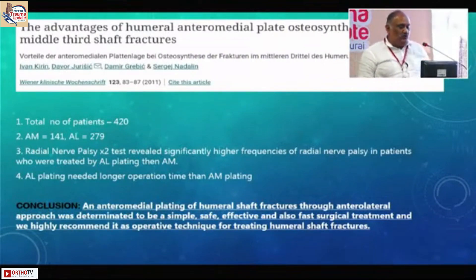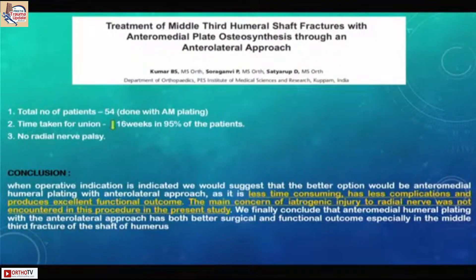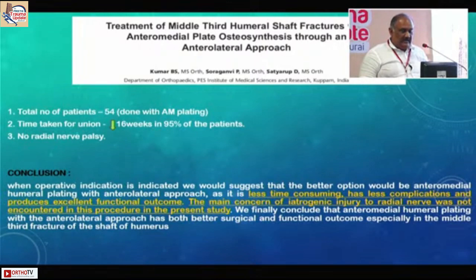This is another ipsilateral shaft of humerus and both-bone forearm injury with good fixation and excellent results. In the largest study of nearly 420 patients, radial palsy was significantly more frequent in patients treated by anterolateral plating than anteromedial plating. Anterolateral plating also required longer operation time. A study of 54 patients demonstrated that anteromedial plate osteosynthesis is less time-consuming, has fewer complications, and produces excellent functional outcomes — with no iatrogenic radial nerve injury encountered.